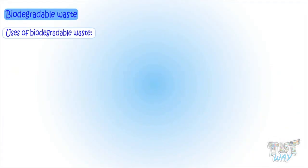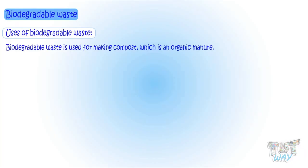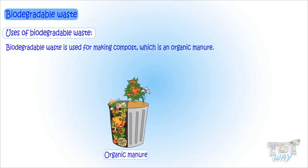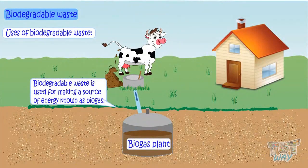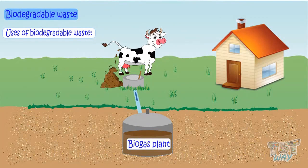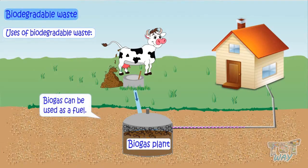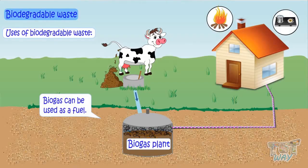Biodegradable waste can be used in many ways. It can be used for making compost, which is an organic manure. It is also used for making biogas — a source of energy. In the absence of oxygen, biodegradable waste decays and produces methane gas, which is used as fuel through various biogas plants and can be used for heating, cooking, and even generating electricity.